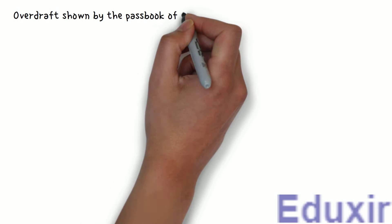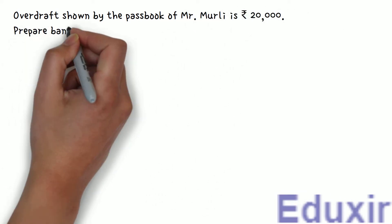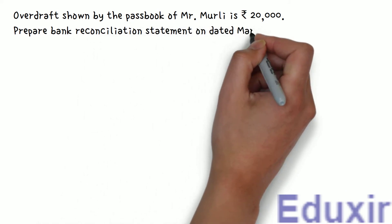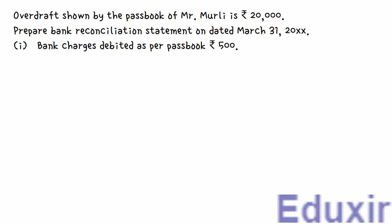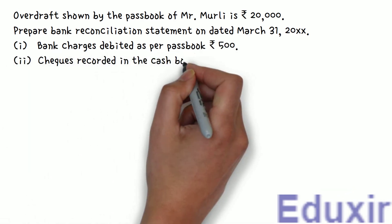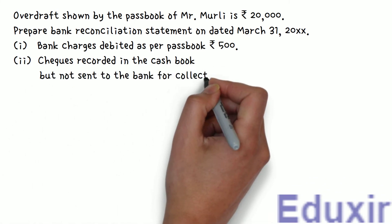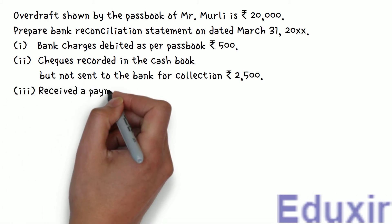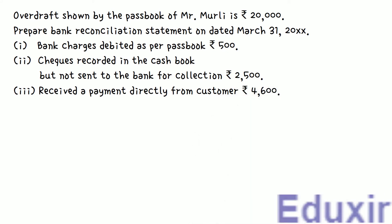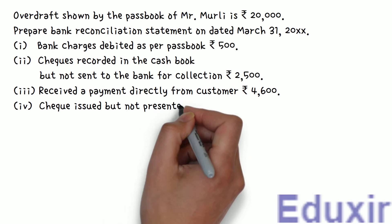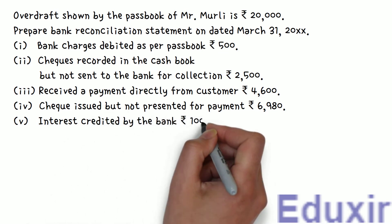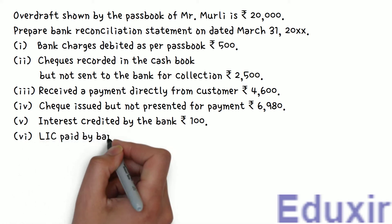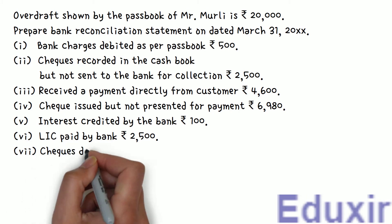The problem statement is as follows: overdraft shown by the passbook of Mr. Moorley is 20,000 rupees. Prepare bank reconciliation statement as of March 31st 2000. (1) Bank charges debited as per passbook: 500 rupees. (2) Checks recorded in the cashbook but not sent to the bank for collection: 2,500 rupees. (3) Received a payment directly from customer: 4,600 rupees. (4) Check issued but not presented for payment: 6,980 rupees. (5) Interest credited by the bank: 100 rupees. (6) LIC paid by bank: 2,500 rupees. (7) Checks deposited with the bank but not collected: 3,500 rupees.